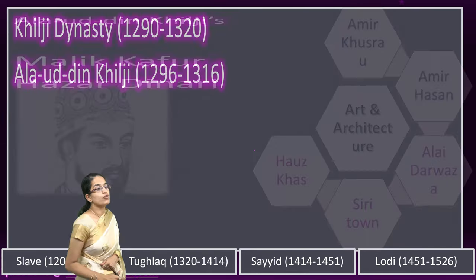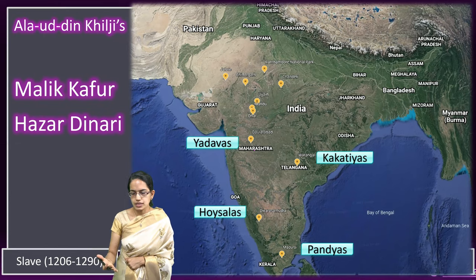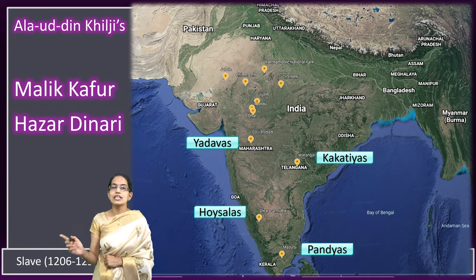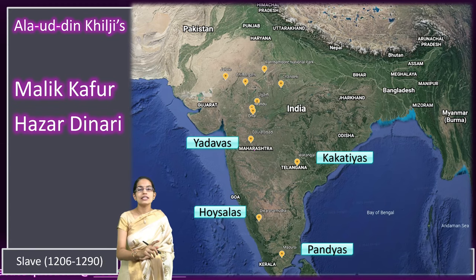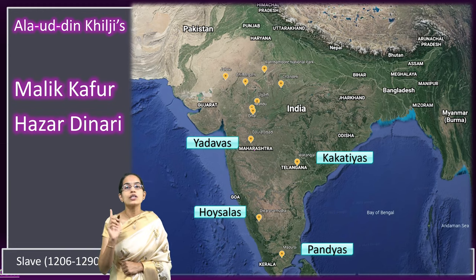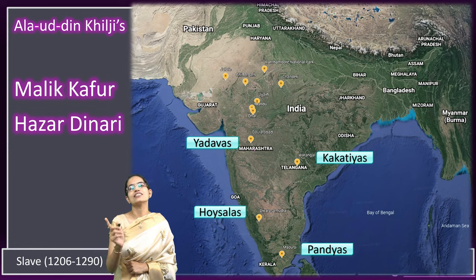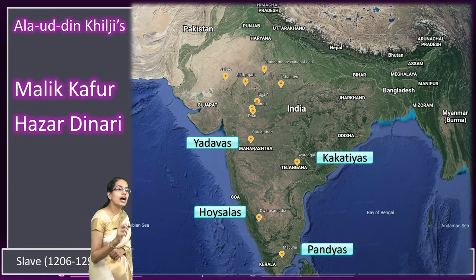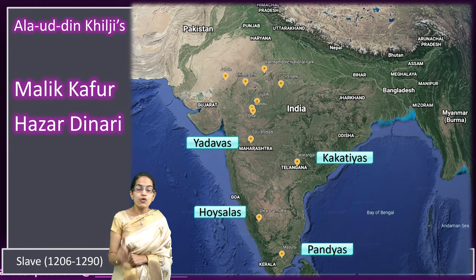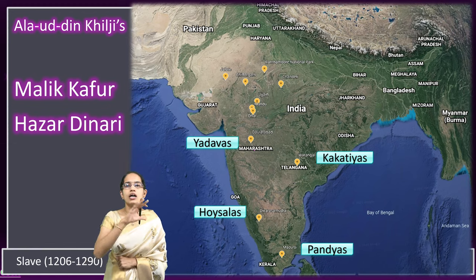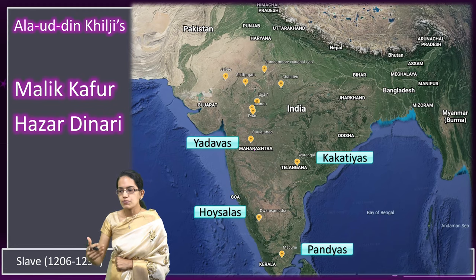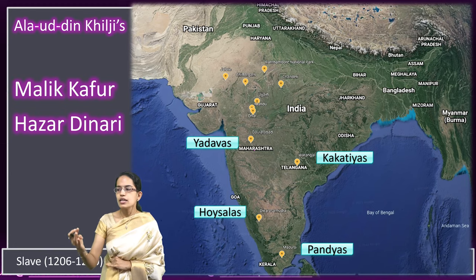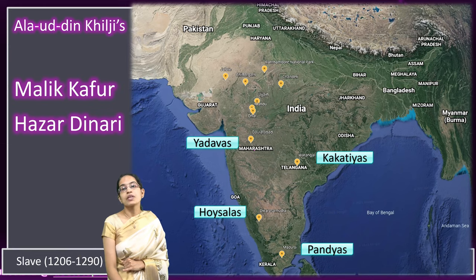Under his rule, Malik Kafur was the most able person. Alauddin Khilji raided Gujarat and from the port of Cambay brought a slave — Malik Kafur. Malik Kafur was bought for 1,000 dinars, and therefore his name was Hazardinari. He turned out to be the most trusted general under Alauddin Khilji. With Malik Kafur coming to prominence, a series of major invasions started in India. The raid of Gujarat in 1299 was conducted under Ulugh Khan and Nusrat Khan.